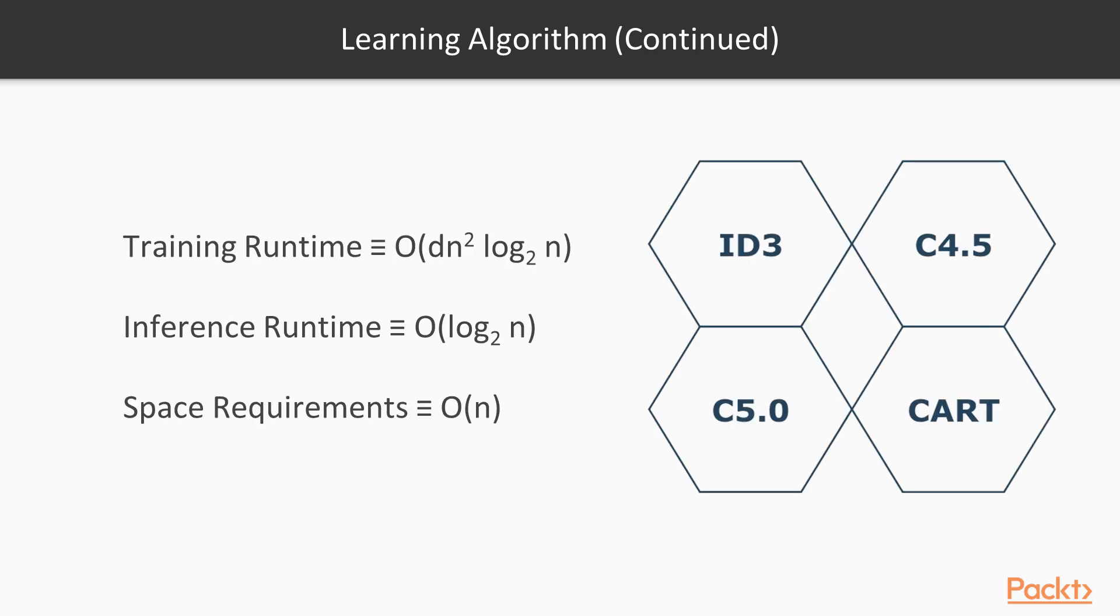Now in order to drive this discussion home, it remains to explore the runtime and space requirements of the learning algorithm. The training involves sorting the values at each node, which can be done in n log n time. This is multiplied by n, which is the number of nodes, multiplied by d, which is the number of features. So the training is quadratic at best. The inference, however, is very fast since only one path of the tree should be traversed, and this is always logarithmic. The storage requirements is linear, which makes the resulting model very lightweight and portable.